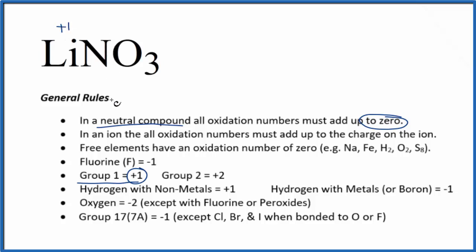The nitrogen we can't tell from our rules, but the oxygen, that's going to be a minus two, just with a few exceptions. So each oxygen is going to be minus two. We don't know the nitrogen, we'll put an X there.